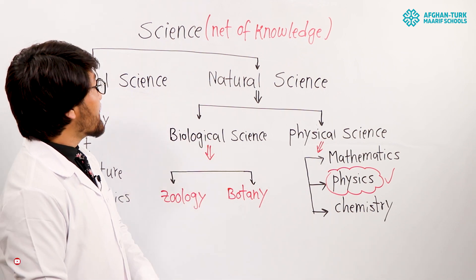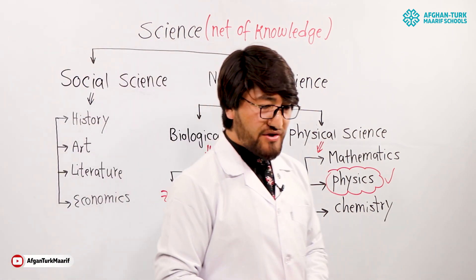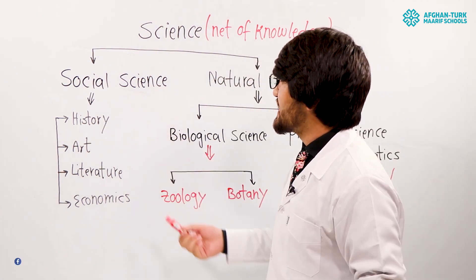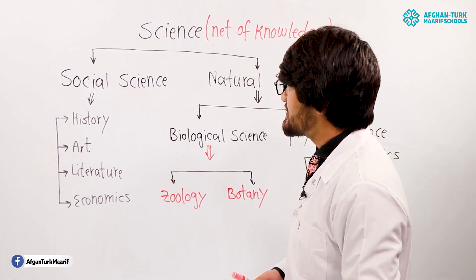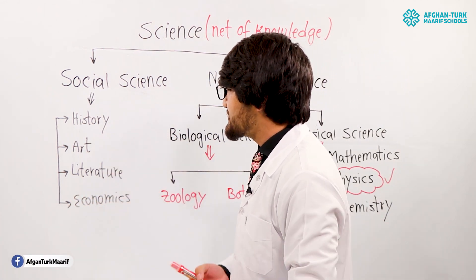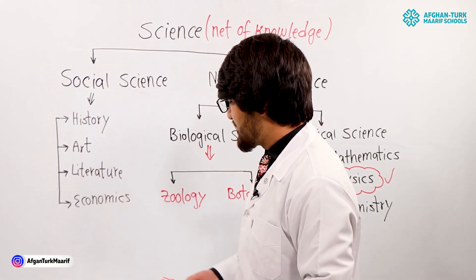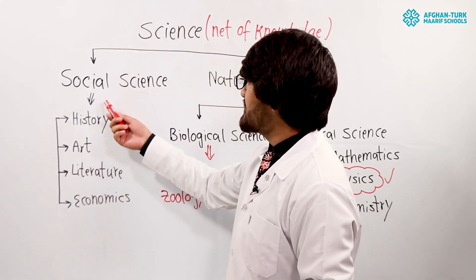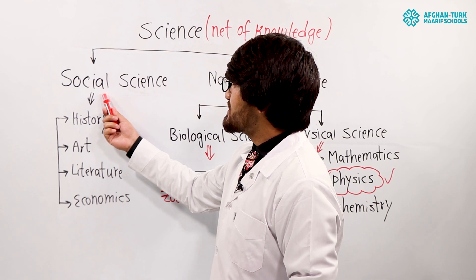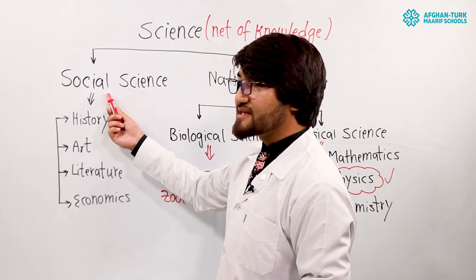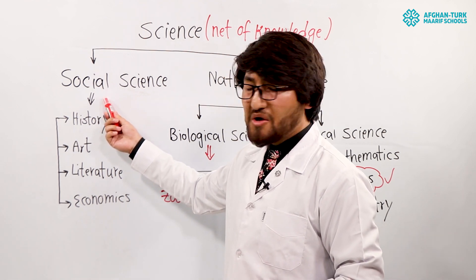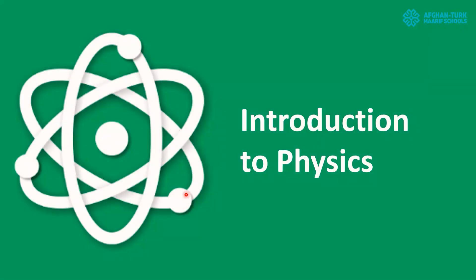Now we have social science. The subjects you may study in school under social science are history, arts, literature, and economics. This all depends on social science. Okay, students, we study the branches of science.